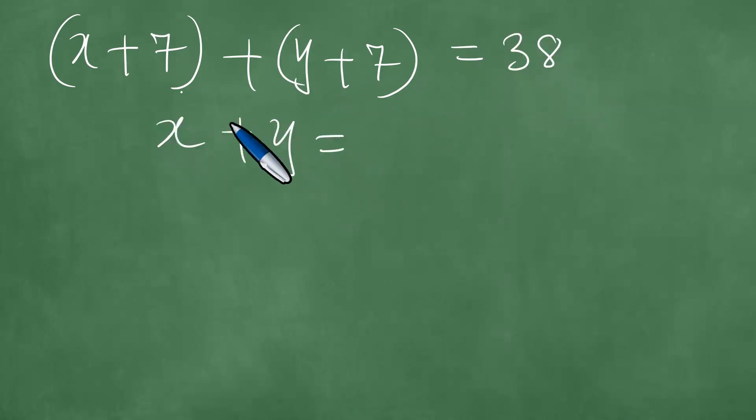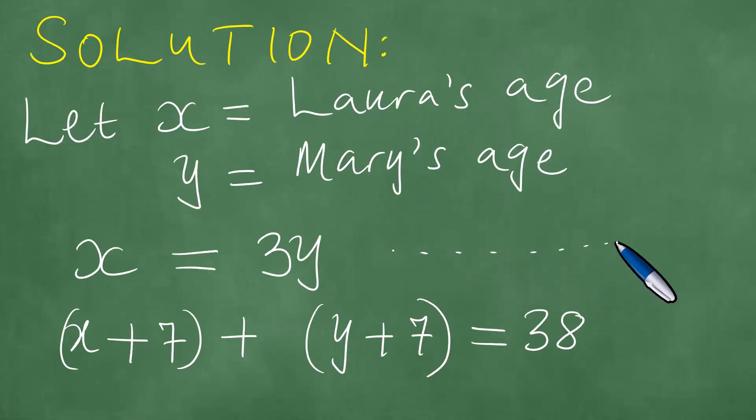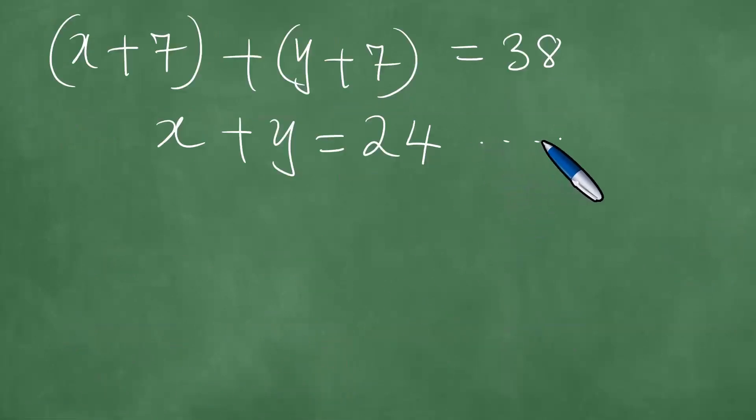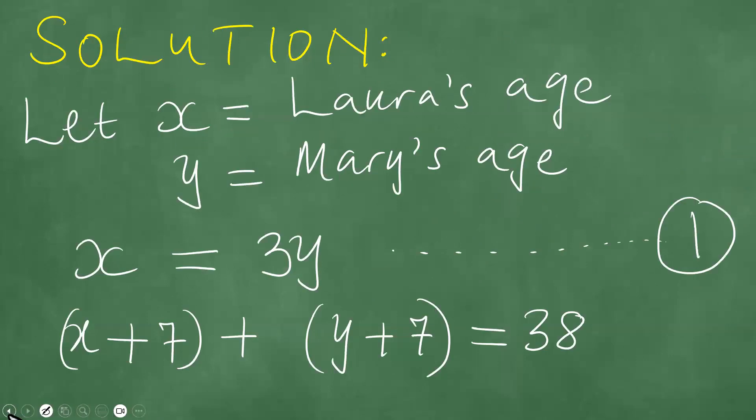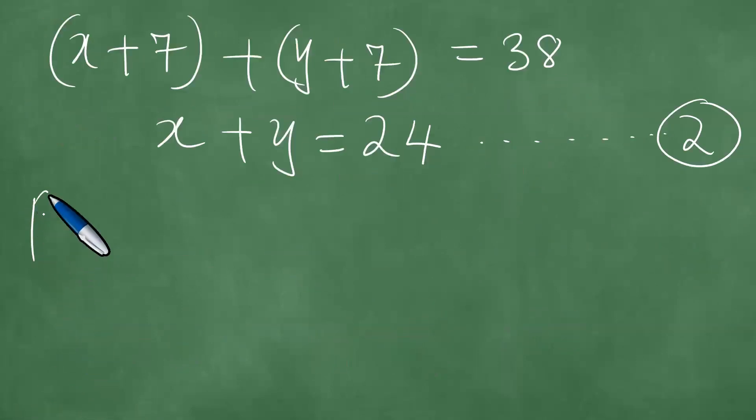It means that you have x plus y equals, seven plus seven is 14. You subtract 14 from 38, and what you're going to get is 24. So now, at this point, what we have here is that x is equal to 3y, and this constitutes the first algebraic equation. And so now we have this here, which is the second algebraic equation.